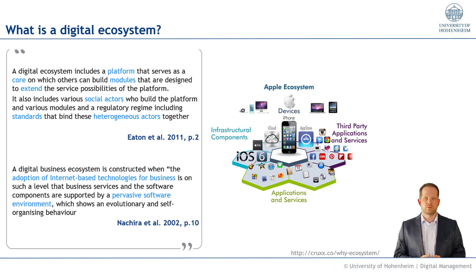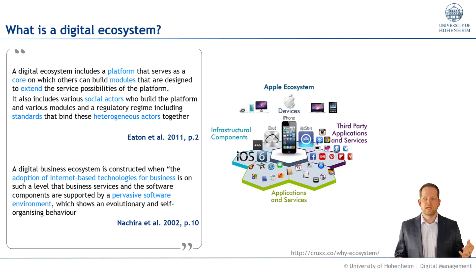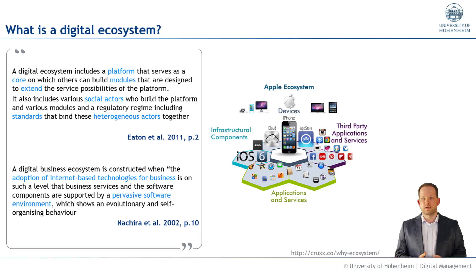Let's look at the example on the right-hand side. In the Apple ecosystem, you see the iPhone as the device at the center. Around it are many different parts: infrastructural components like iOS, the operating system, or iCloud; applications and services provided by Apple, like the Safari browser or the built-in podcast app; and third-party applications and services. The iPhone is not the only hardware Apple has — they also have the iPad, iPod, Macs, and so on.